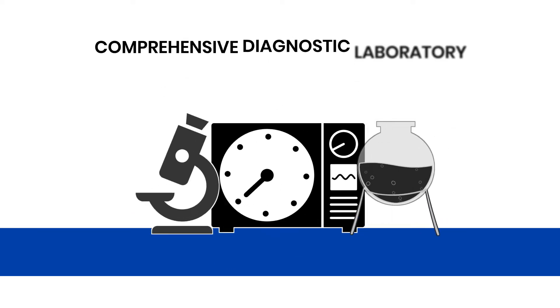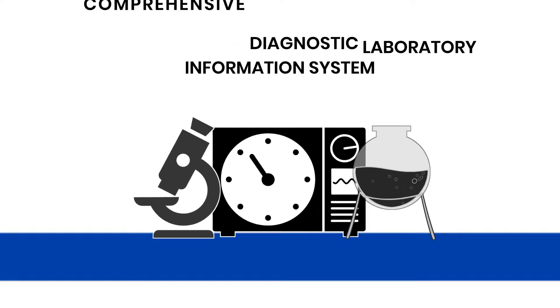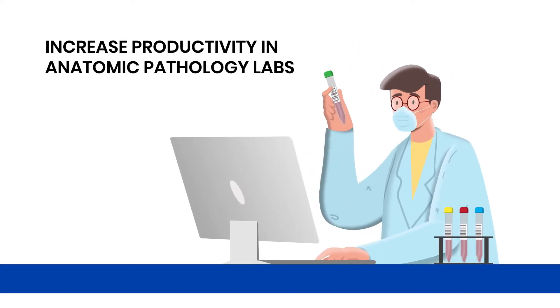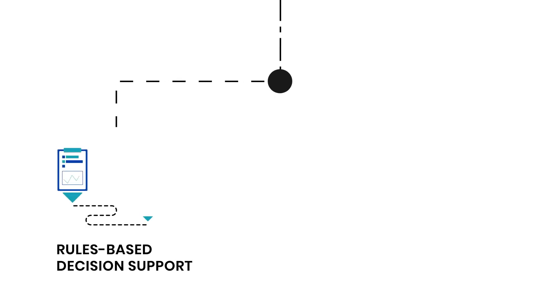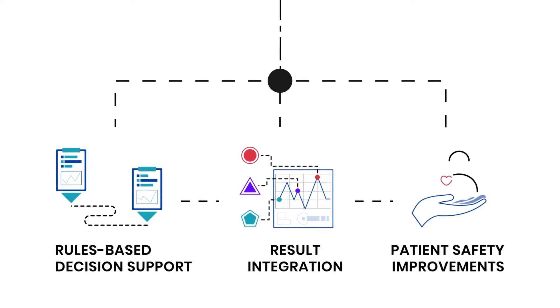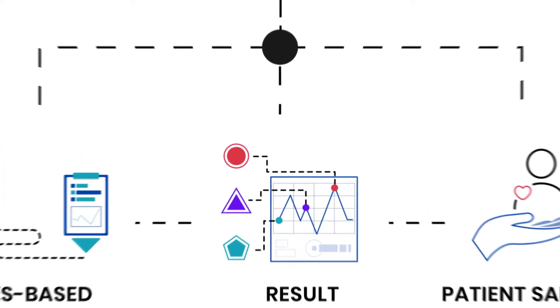Orchard's APLIS is a comprehensive diagnostic laboratory information system used to increase productivity in anatomic pathology labs. Our integrated solution allows labs to record and track specimens and to distribute pathology findings rapidly for timely diagnosis and treatment planning.